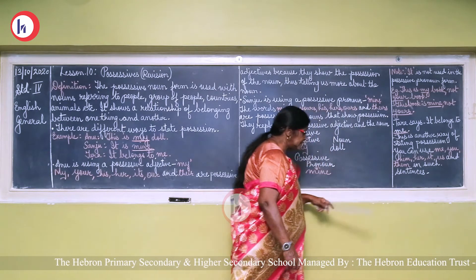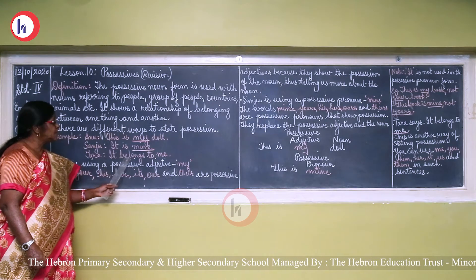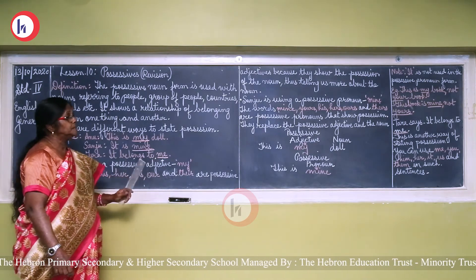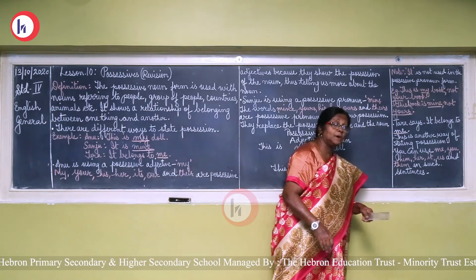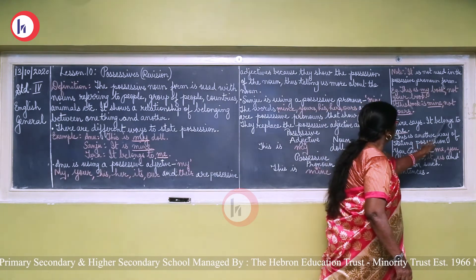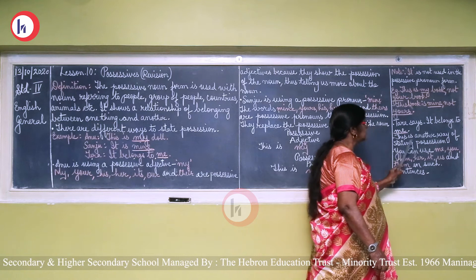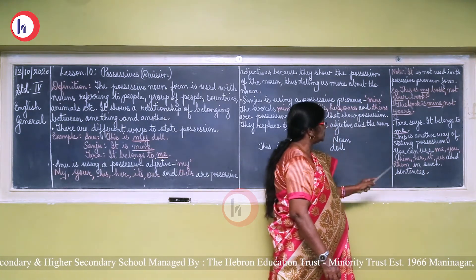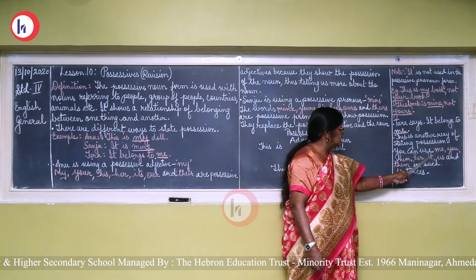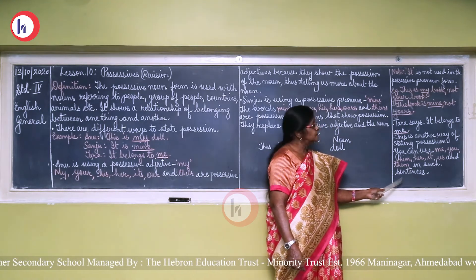Now the last sentence — what Tara was saying. Tara says, 'It belongs to me.' This is another way of expressing possession without using an adjective. You can use me, you, him, her, us, and them in such sentences.